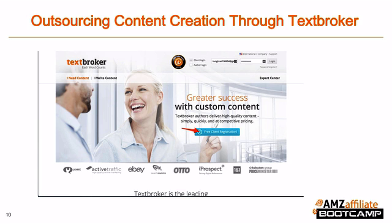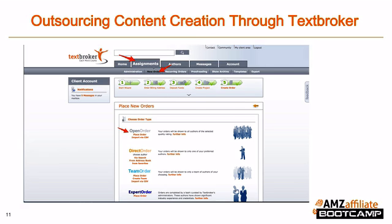Now let's go through the specific step-by-step process for hiring through TextBroker. First, you need to get an account. After logging in, hover over the assignments tab and click new order. From there you'll be presented with four options: open order, which is what you'll commonly use in the beginning — your order will be shown to all authors of your selected quality rating; direct order, which is sent directly to writers you select; team order, which you can choose if you've created a team around your project and invited your favorite writers; and expert order, which really only applies to finance, so skip it if you're not in that niche.